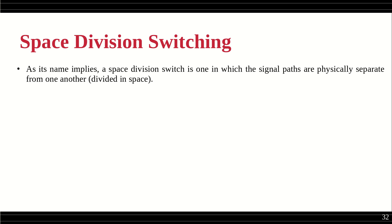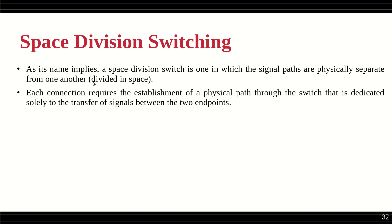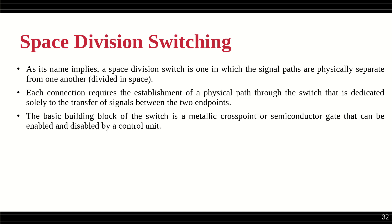Space division switching, as its name implies, is one in which the signal paths are physically separate from one another. Between every pair of input and output there is a dedicated path not shared by others. Each connection requires the establishment of a physical path through the switch dedicated solely to transferring the signal between two endpoints, with dedicated cross points connecting the sender and receiver.